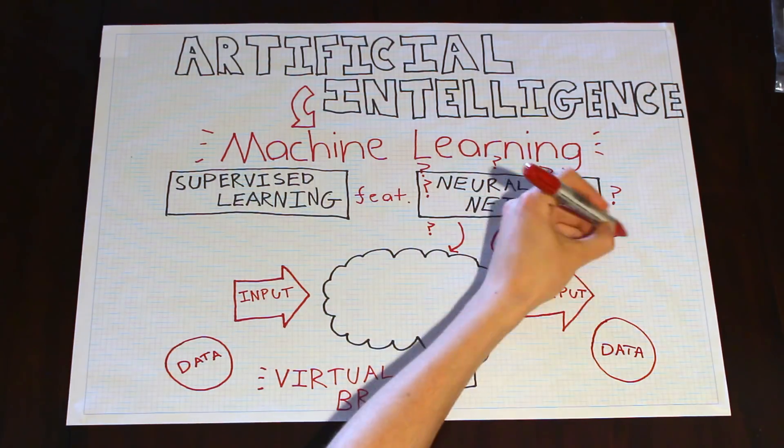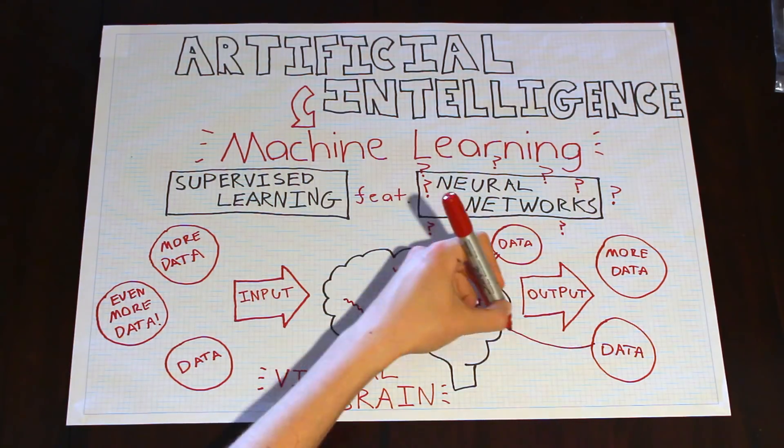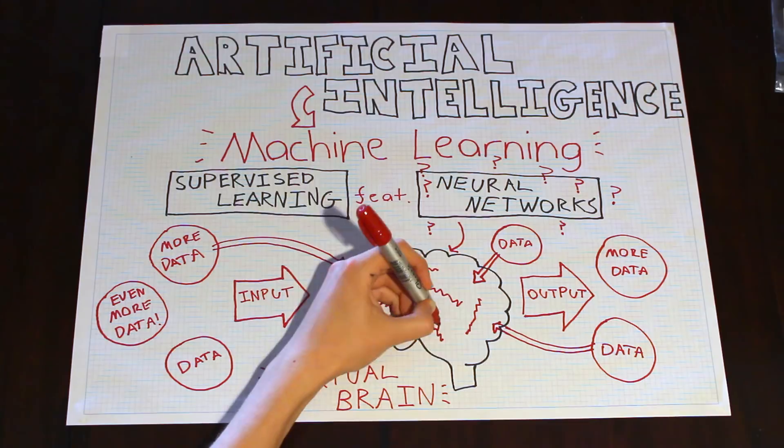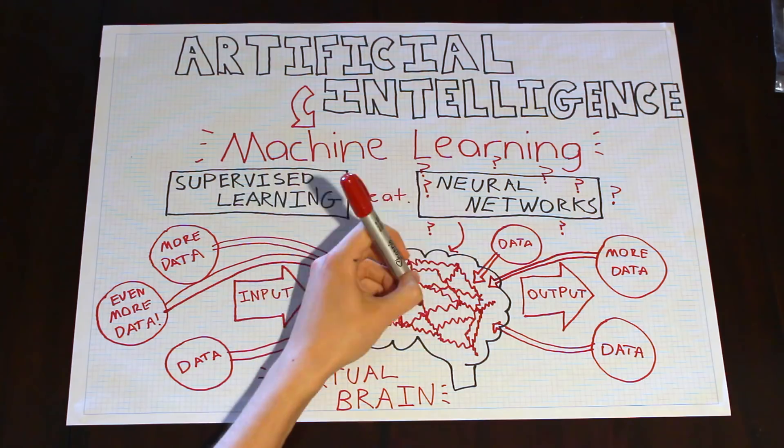In order to get the brain to perform the tasks we want, we have to feed it lots of data. And in supervised learning, this data is used to build up connections in the brain that allow it to perform the tasks we want. Generally, the more data you feed into the neural network, the better it is at the task.